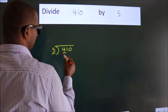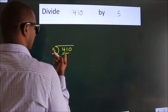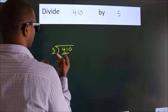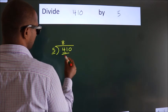So we should take 2 numbers, 41. A number close to 41 in 5 table is 5 8s 40.